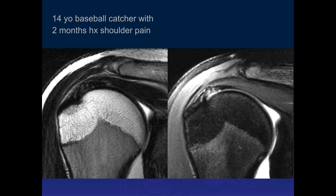On the coronal images, what did you see, Sahar? There is increased signal — I think there's moderate intersubstance partial thickness tearing of the supraspinatus.